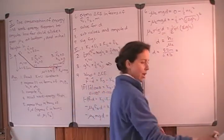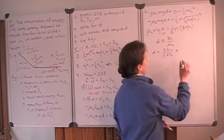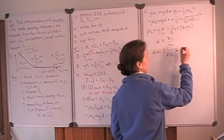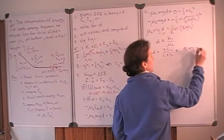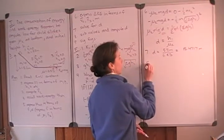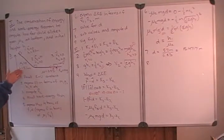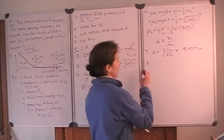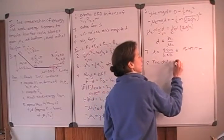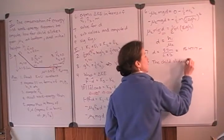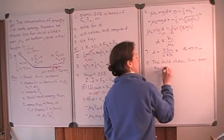Now we substitute our numbers. The height was 8.2 meters and the coefficient of kinetic friction was 0.53, which is unitless. That gives us 15.4717 meters. Our given values were to two significant figures, so our answer is also to two significant figures: the child slides 15 meters over the rough patch.